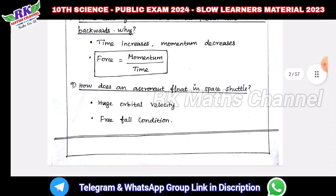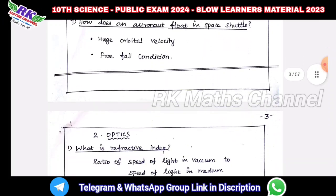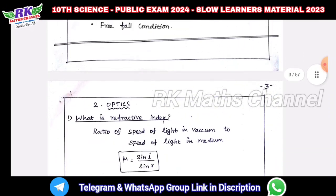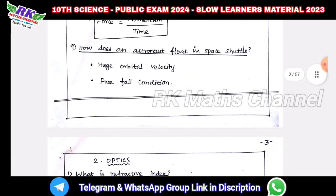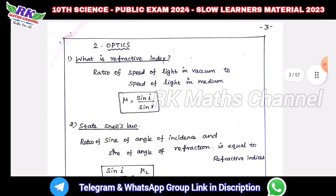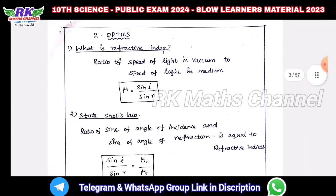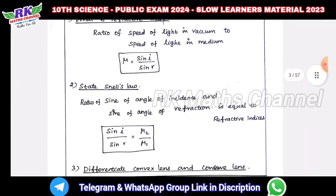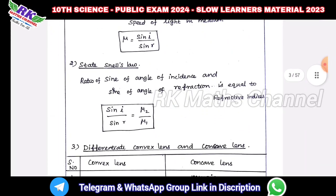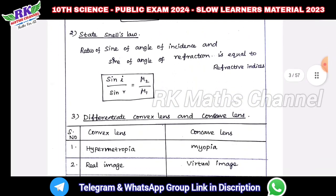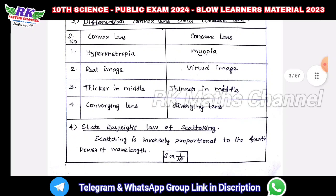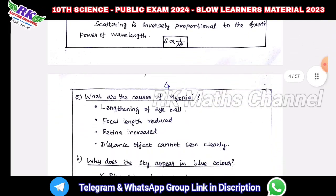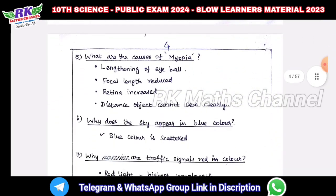You will find it in the first lesson — nine questions. Next, second lesson: optics. The important topics are convex lens, concave lens, and myopia — important questions.